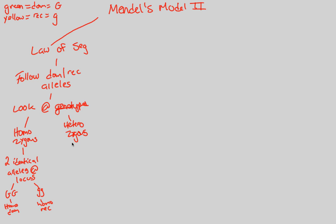Heterozygous is when we have two different alleles at the locus — the location for these genes. There's only one option: to have two different alleles, a capital and a lowercase, a dominant and a recessive. The outcome of this will be different from the homozygous cases based on the phenotypes.